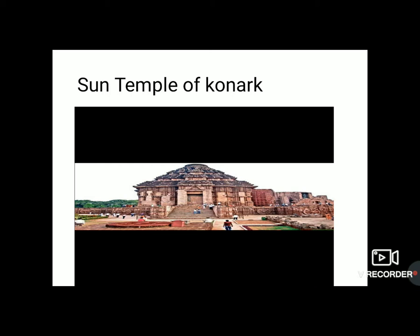These are the grand temples built at the time of Rajput rulers, made of rocks. The Konark temple was constructed with great fineness and was shaped like a chariot driven by seven horses. You can see the wheels on the right side and left side of the temple — it represents a Rath, and the Rath is carrying the temple. This chariot is driven by seven horses.